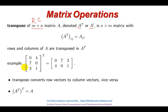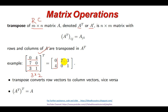Transpose essentially means converting your rows into columns and columns into rows. For example, if you look at this original matrix, it has different rows and columns — it is a 3 by 2 matrix, meaning three rows and two columns. This row, this row, and this row are converted accordingly — for instance, elements 1, 1 and 3, 1, 3, 1 get converted.